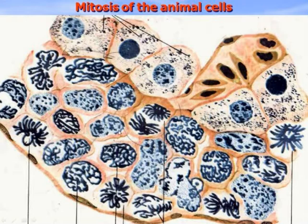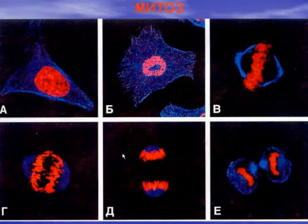Metaphase, anaphase, and prophase — this is a nice picture of mitosis in a fluorescent microscope, where DNA is shown in red color and microtubules in blue color.